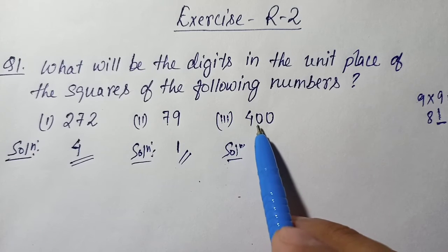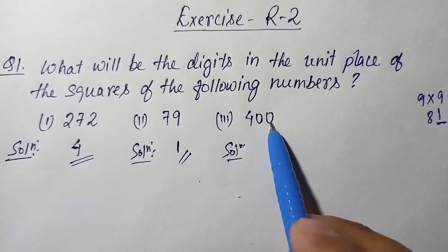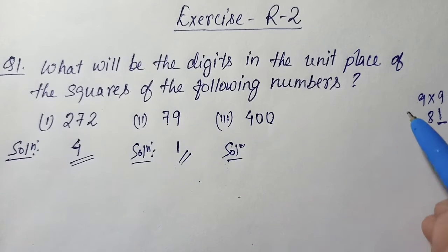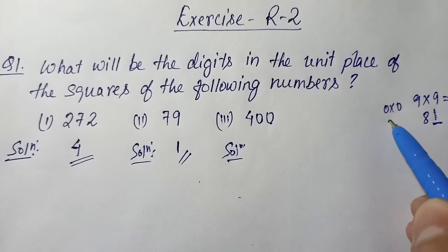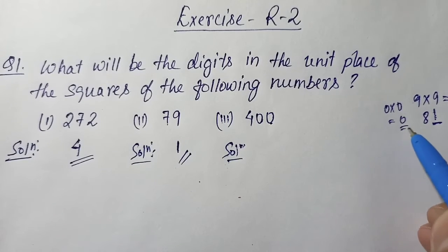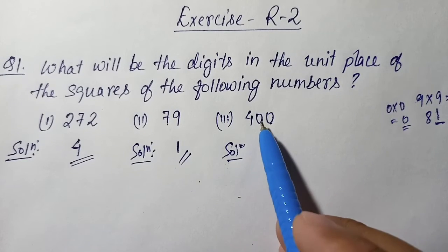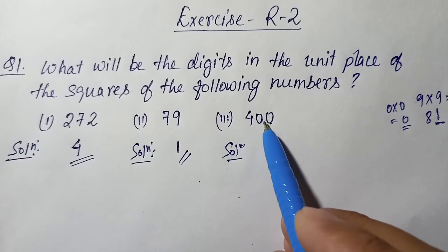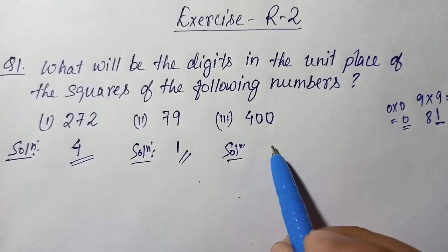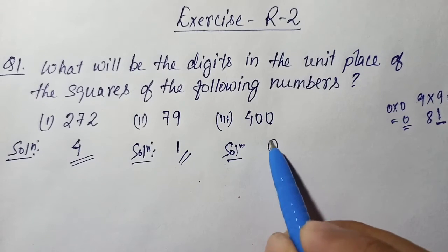Number 3: the number is 400. Here the unit digit is 0. If you make a square, you get 0 into 0 = 0. So if you make a square of this number, the unit digit will be 0.